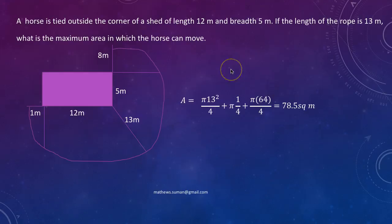This is a problem on circumference scenario. A horse is tied outside the corner of a shed of length 12 meters and breadth 5 meters. If the length of the rope is 13 meters, what is the maximum area in which the horse can move?